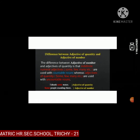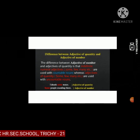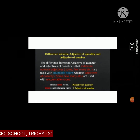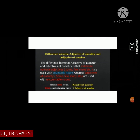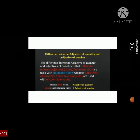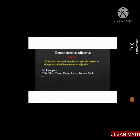Difference between adjective of quantity and adjective of number. Indefinite numeral adjectives — some, few, many, etc. — are used with countable nouns. Whereas adjectives of quantity — some, few, many, etc. — are used with uncountable nouns. Example: 'I drank some water' is adjective of quantity. 'Some people standing there' is adjective of number.